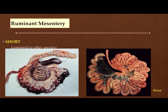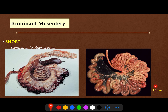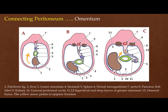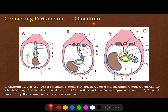If we look at the mesentery of ruminants, we find it short compared to the horse or other animals, and that's why it's difficult to get parts of the intestine outside in case of surgery. Now we will speak about another part of the connecting peritoneum called the omentum. When we hear the word omentum, we should remember the stomach — omentum means cover.